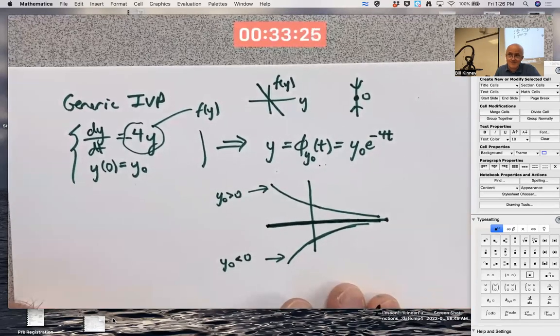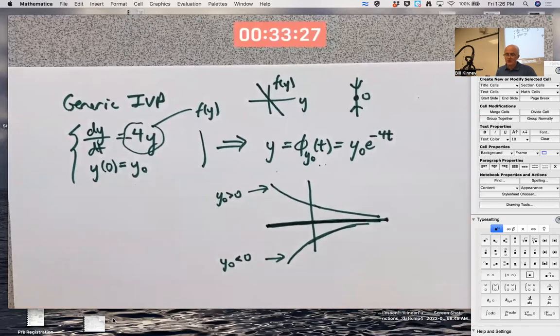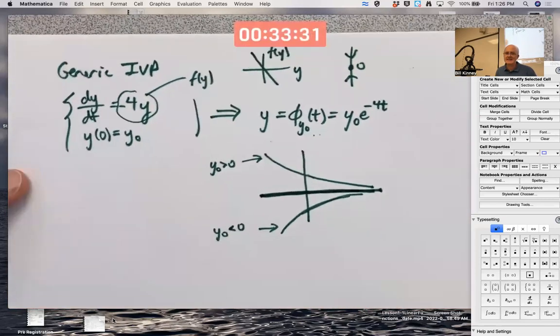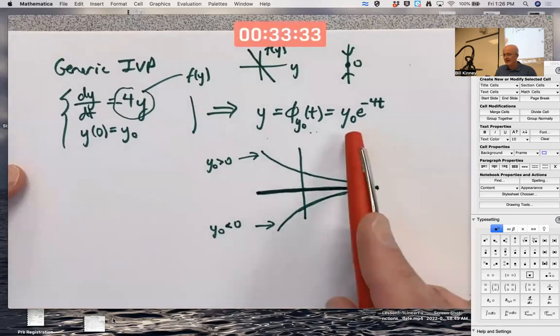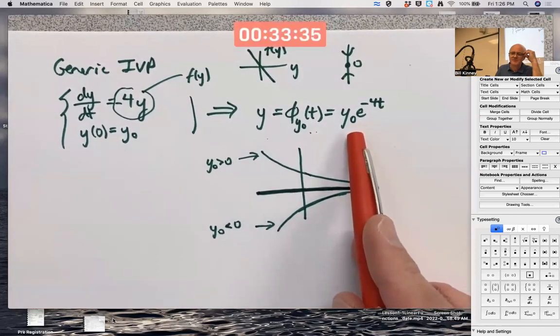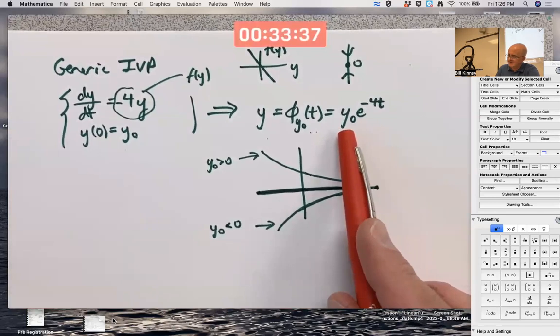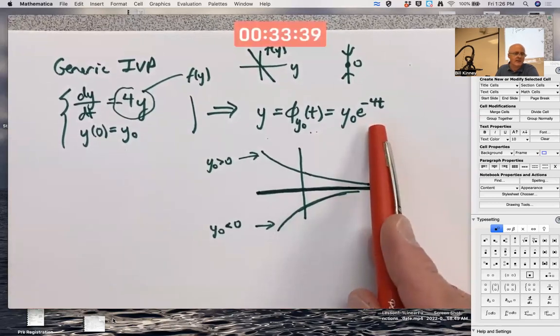This is what we're used to, right? What's new with the flow idea? The flow idea is to say, when I look at that equation, so far I've been thinking of y_0 is fixed and t is the variable. But wait a minute. Whether a letter is a variable or is a constant is all in your head.